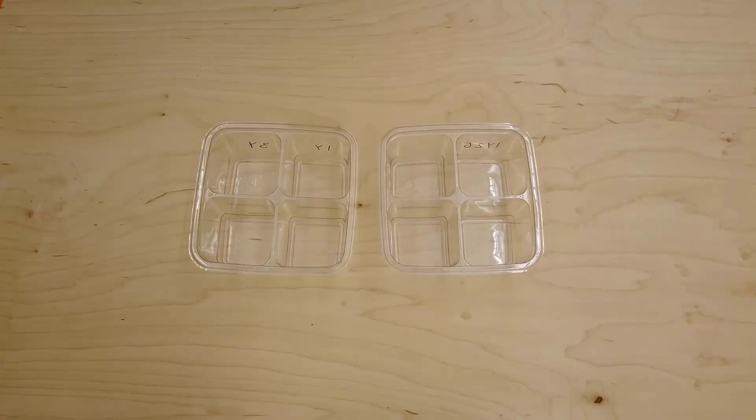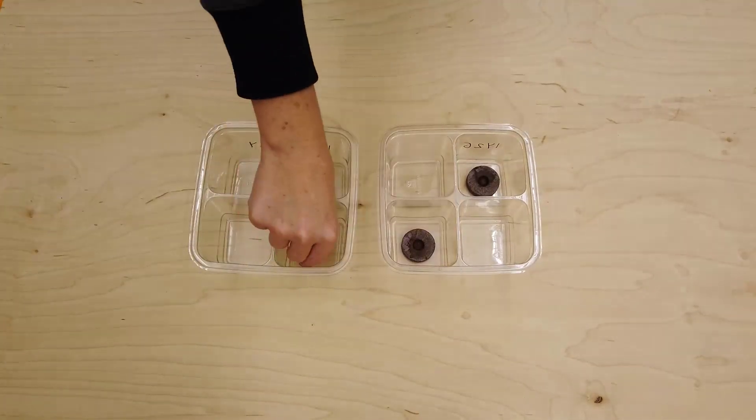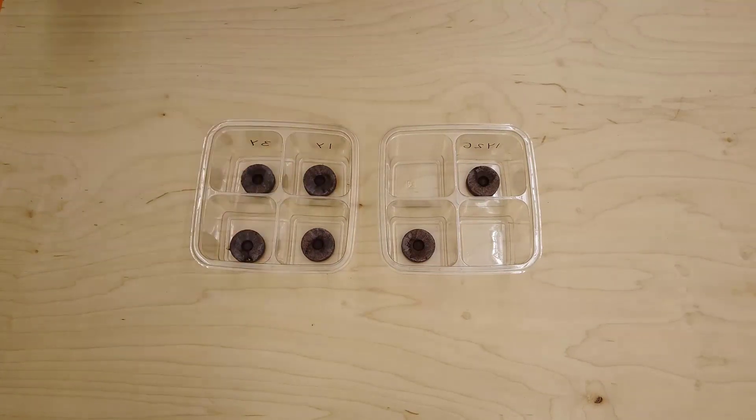After labeling the compartments, place a pellet in each one. Please note, you will have 2 unused compartments.